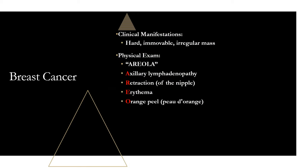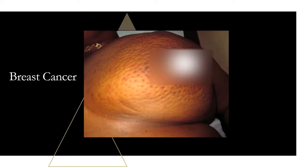O stands for orange peel — also known as peau d'orange, a French term meaning orange peel or orange skin. This is a really important finding that often comes up in exam questions. It's a potential finding in inflammatory breast cancer, where due to erythema, thickening, and dimpling of the overlying skin, the breast can take on the appearance of an orange peel — that's why it's called peau d'orange.